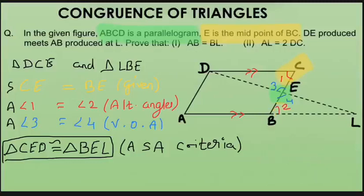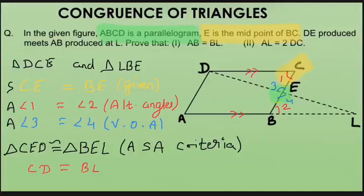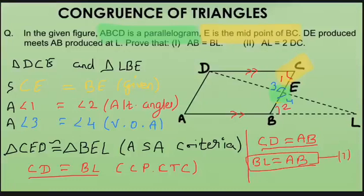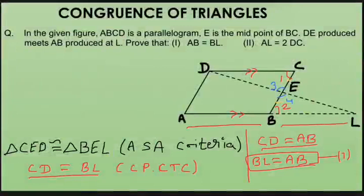What is asked is that AB equals BL. Here, BL corresponds to CD, and since they are corresponding parts of congruent triangles they are equal by CPCTC. Going back to the parallelogram, opposite sides are equal, so CD equals AB. From these two equations, BL equals AB — our first part is proved. B is therefore the midpoint of AL.